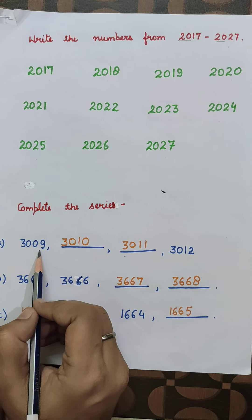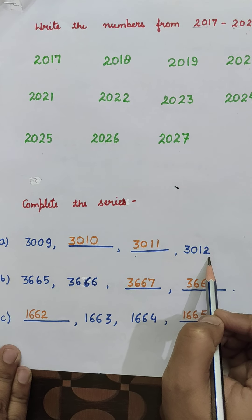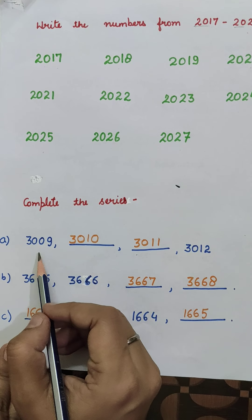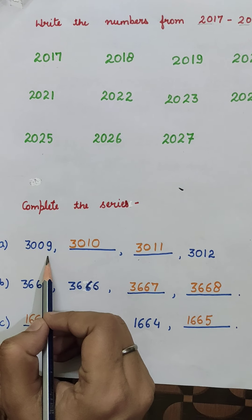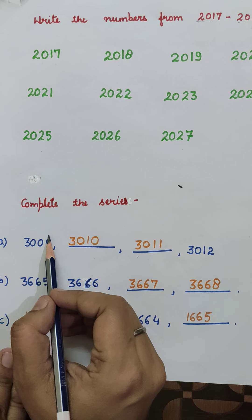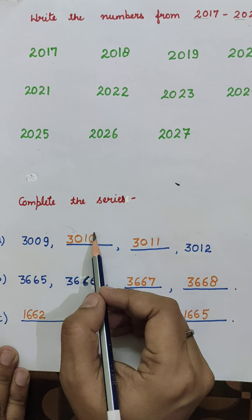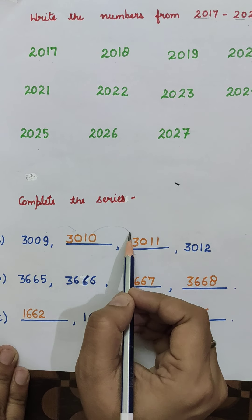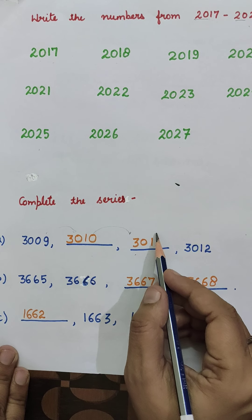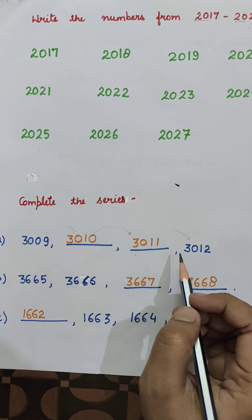Suppose it has given: 3009, ___, ___, 3012. We have two blanks. So after 3009, what comes? 3010. Then after 3010, what comes? 3011. And after 3011 comes 3012 — so our answer is correct.